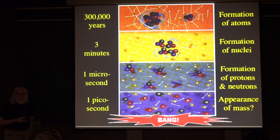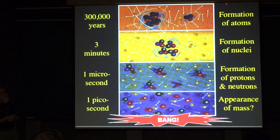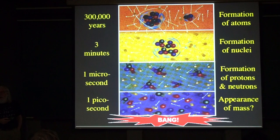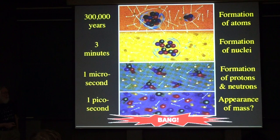I talked about a couple of cosmological issues. Here is a summary of the early history of the universe. Atoms came into existence when the universe was about 300,000 years old — before then no atoms, no chemistry, no biology, only physics. Nuclei only came into existence when the universe was about three minutes old. Protons and neutrons didn't come into existence until the universe was about a microsecond old; before then there were only the fundamental particles of the standard model.